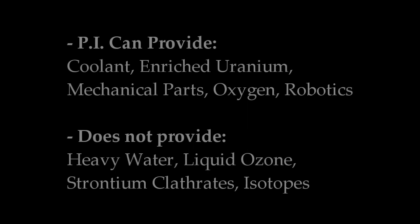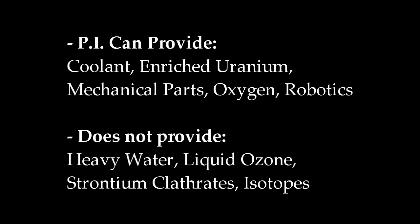As many of you POS owners have probably heard by now, you will be able to provide some, but not all, of the items to fuel your POS through planetary interaction. Specifically, you'll be able to provide most of the common continuous fuels — coolant, enriched uranium, mechanical parts, oxygen, and robotics.